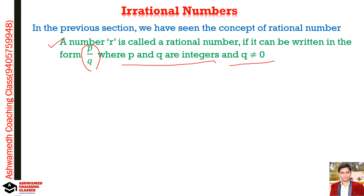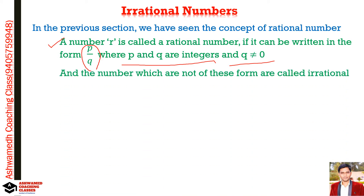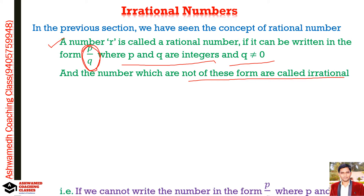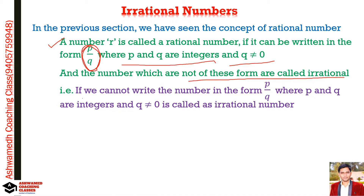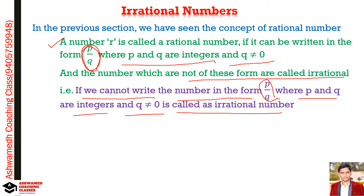So what is irrational? Irrational means numbers which are not rational. Numbers which are not of the form p/q are called irrational. So if we cannot write a number in the form p/q, where p and q are integers and q is never zero, that number is called an irrational number.